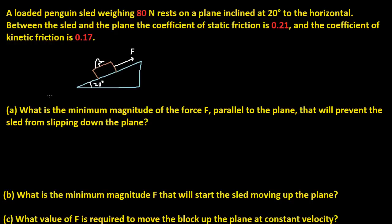What the problem is asking is: what is the minimum magnitude of the force F, parallel to the plane, that will prevent the sled from slipping down the plane? That's part A. Let's try to solve this problem.